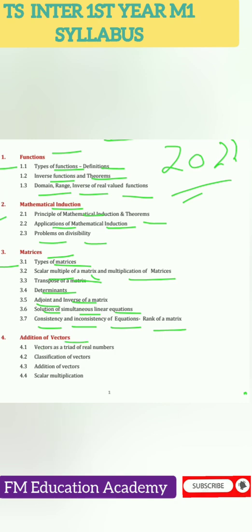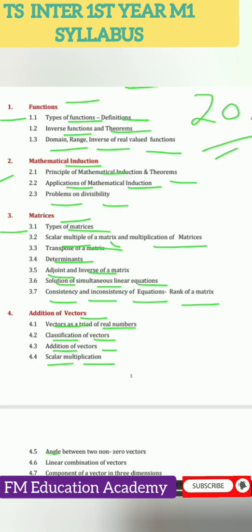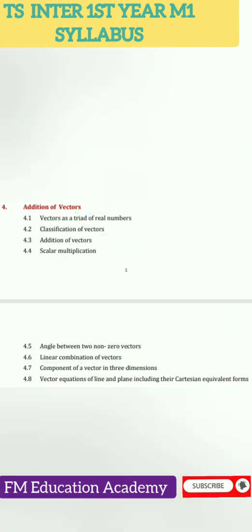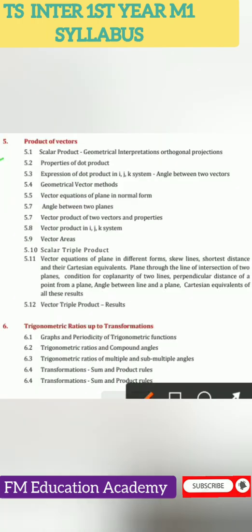Chapter 4 covers addition of vectors: vectors as a triad of real numbers, classification of vectors, addition of vectors, scalar multiplication, angle between two non-zero vectors, linear combination of vectors, component of a vector in three dimensions, vector equations of line and plane, including the Cartesian equivalent forms.